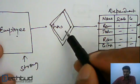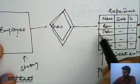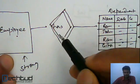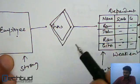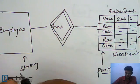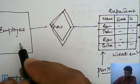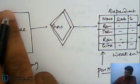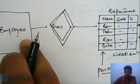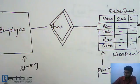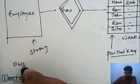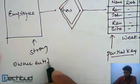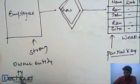The relationship connecting the weak entity and the strong entity is called the identifying relationship. The strong entity type is also called the identifying or owner entity type.